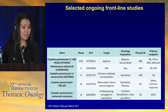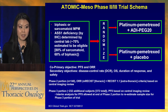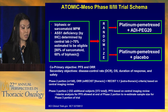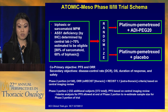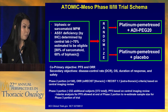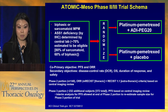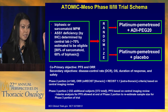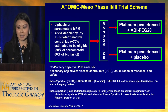The ATOMIC trial is for biphasic and sarcomatoid mesothelioma only, using a drug called ADI-PEG-20, which depletes cancer cells of arginine. Biphasic and sarcomatoid mesothelioma cells have a paucity of argininosuccinate synthetase, so arginine depletion causes cell death. A phase 2 trial published in Lancet showed significant benefit in biphasic and sarcomatoid mesothelioma. ATOMIC is a phase 2/3 registration trial currently ongoing worldwide.